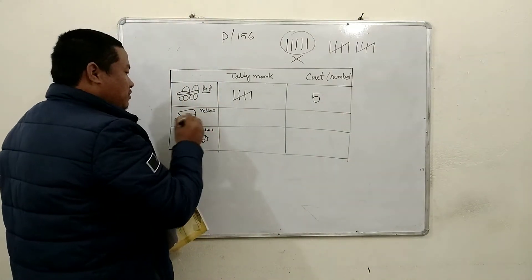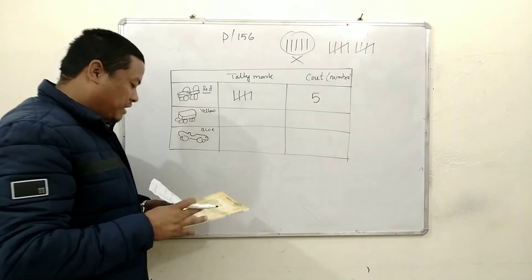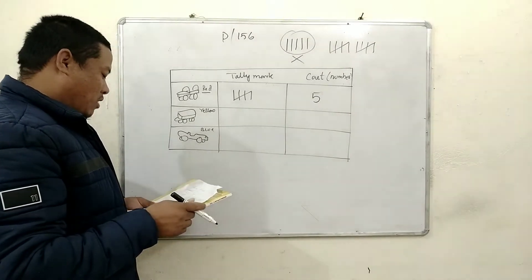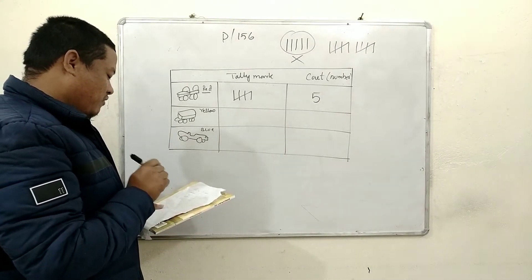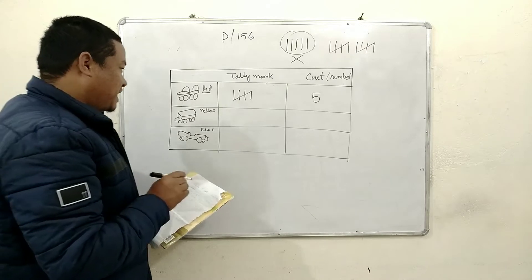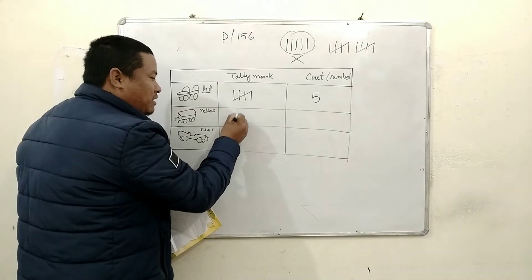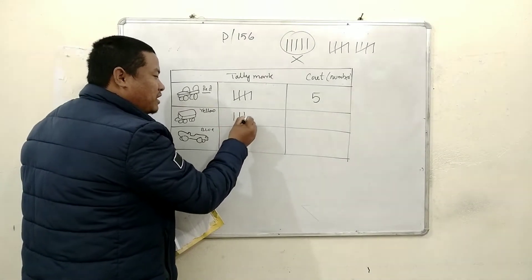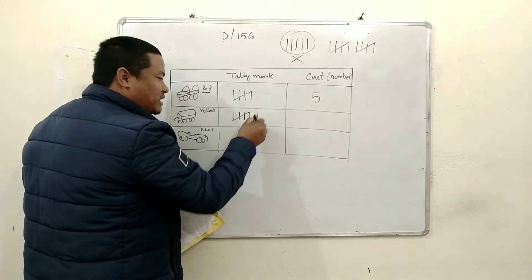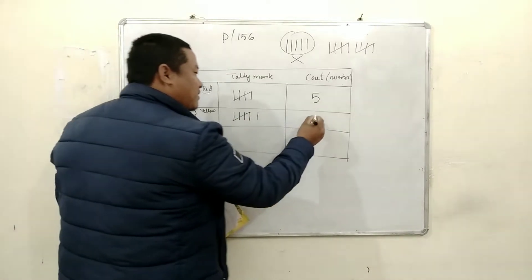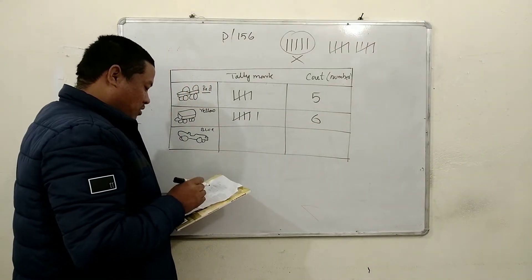Now yellow. Count the yellow — how many yellow cars are there? 1, 2, 3, 4, 5, 6. So in tally marks: 1, 2, 3, 4, 5, 6. And in number, 6.